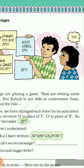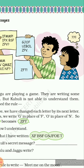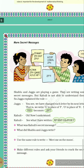It means Khawli ka secret message hai: We are Friends — hum sab dost hain. So as the answer you have to write here: We are Friends. Now the next question is: What did Shablu and Jaggu write?